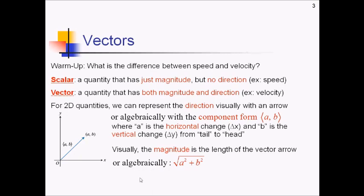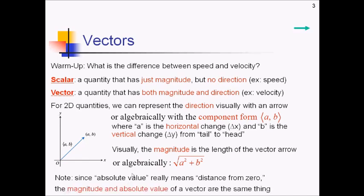Now there's one other thing to talk about here. The symbol for magnitude for vectors is the absolute value symbol. The reason for this is that absolute value really just means distance from zero, which is pretty much what this length of this vector is giving us, just the distance from the origin here. So for that reason, magnitude and absolute value of a vector are one and the same thing.